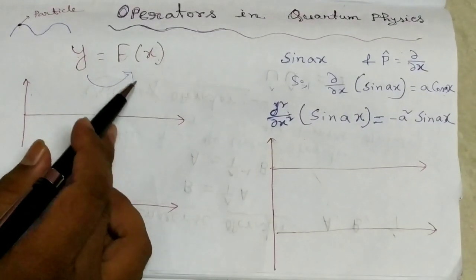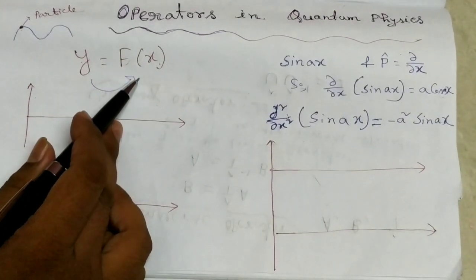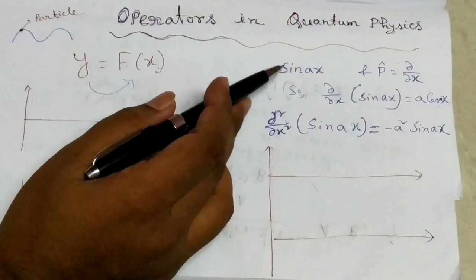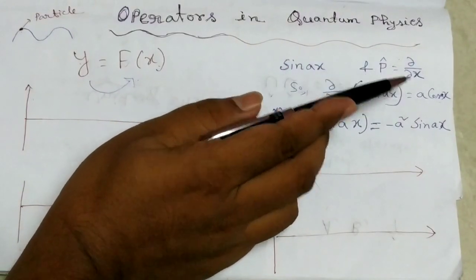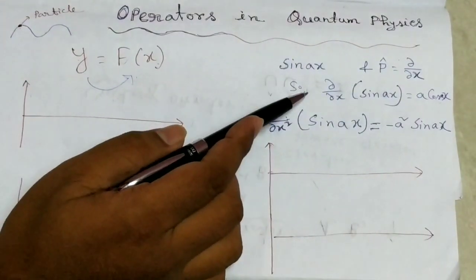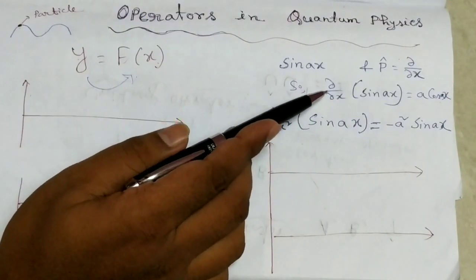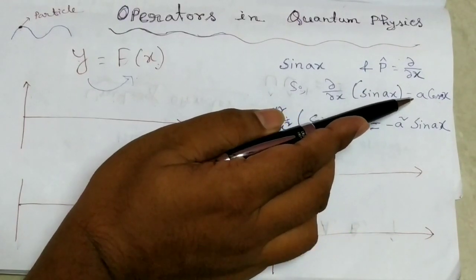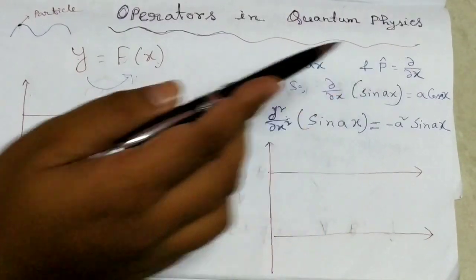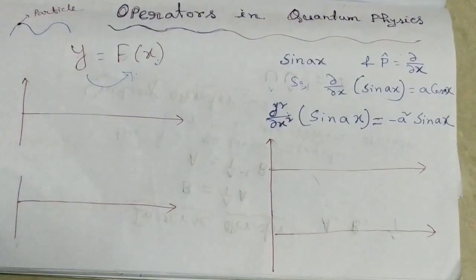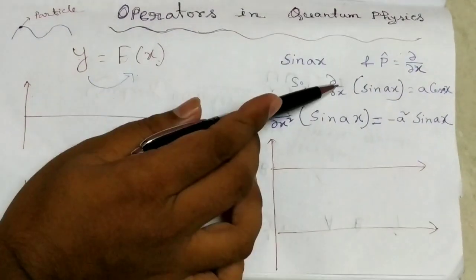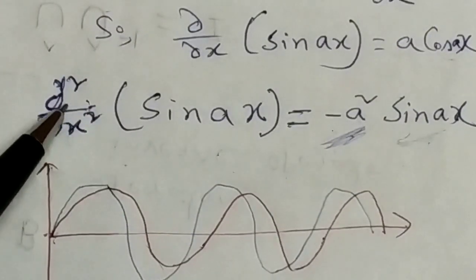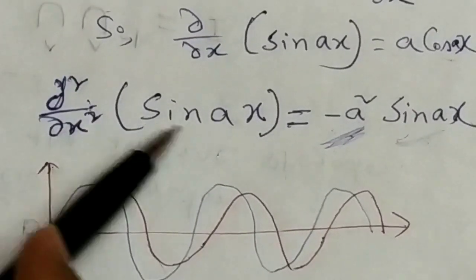For example, Y is a function of X — we are doing mapping here. Suppose one function is sine(aX) and one operator P-cap equals del/del-X. If we differentiate sine(aX) with respect to del/del-X, we get a·cos(aX), where 'a' is the eigenvalue and cos(aX) is the eigenfunction. When we apply the operator, we get a new function.